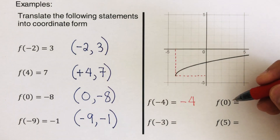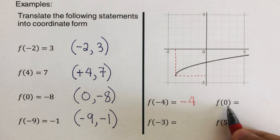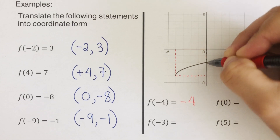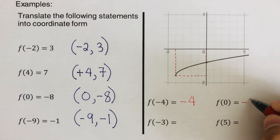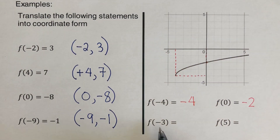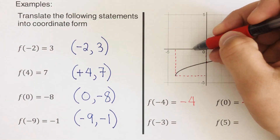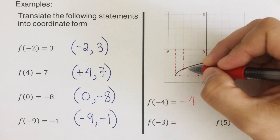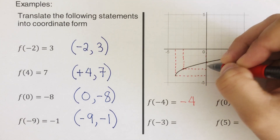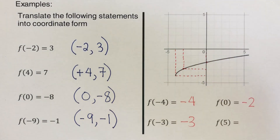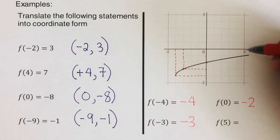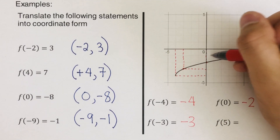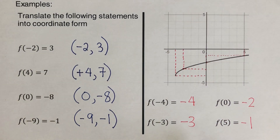Let's go over the remaining problems. For f of zero, the y value is negative two. For f of negative three, let's trace it on the graph — going to negative three on x, the y value is negative three. And for f of five, when x is five, the y value is negative one.